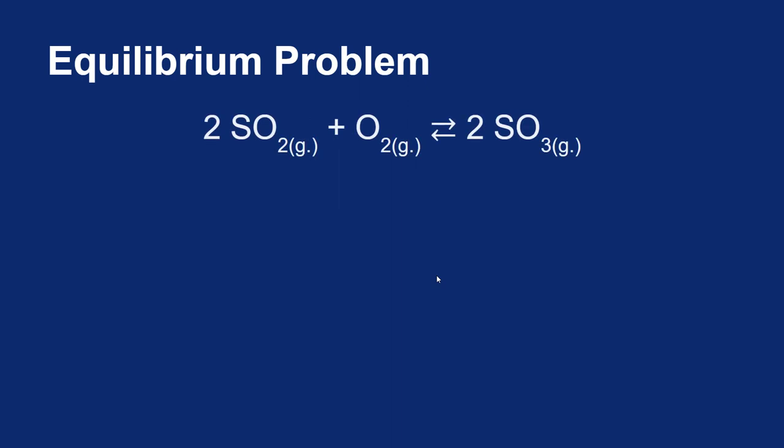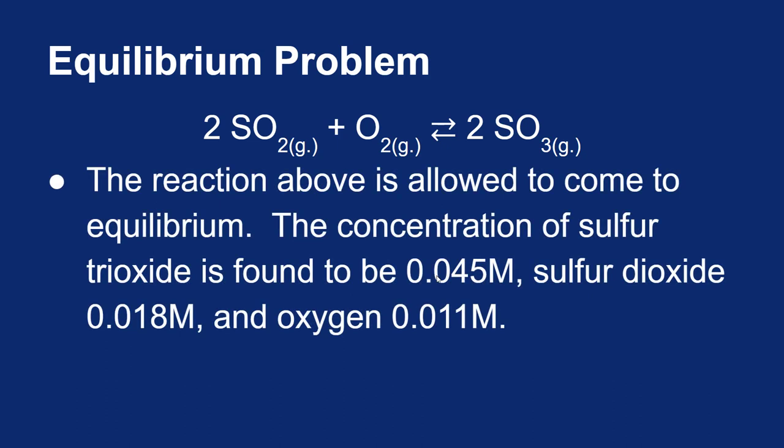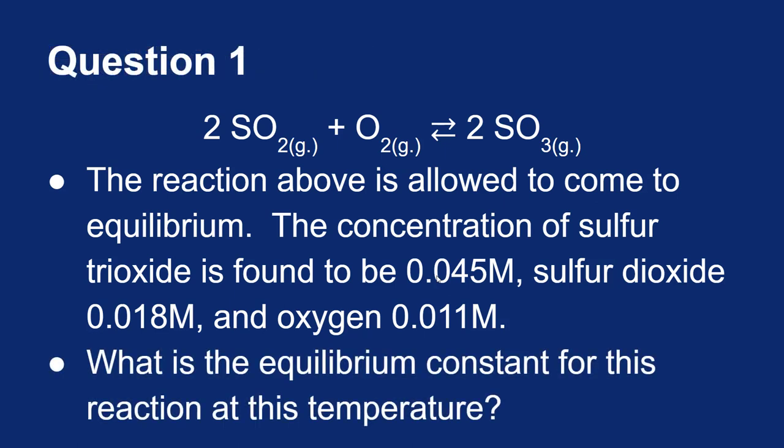All right, let's look at a problem. Let's take sulfur dioxide and turn it into sulfur trioxide by adding oxygen. I let this reaction come to equilibrium and I measure the concentrations of sulfur trioxide, sulfur dioxide, and oxygen. I would like to know what the equilibrium constant is for this reaction at whatever temperature this was done at.